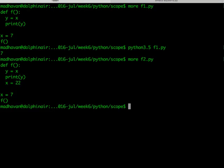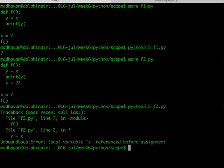Here is f2.py, the code in the bottom middle of the screen. The only difference with respect to f1.py is an extra assignment x equal to 22 inside f. Now if we try to run f2.py, it gives us an error saying that the original assignment y equal to x gives us an unbound local name.